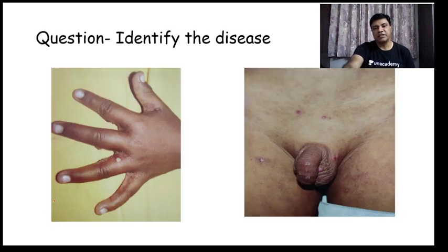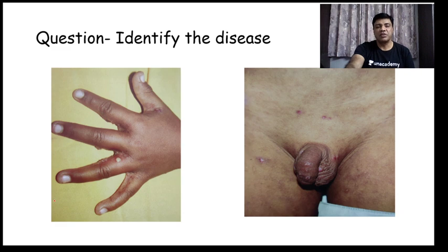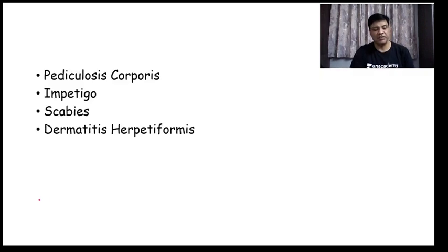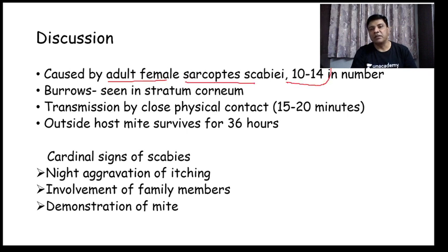Next question: identify the disease. Choices are pediculosis corporis, impetigo, scabies, and dermatitis herpetiformis. The correct answer is the patient is having scabies. Scabies is caused by adult female Sarcoptes scabiei, and in normal individuals the number of mites is only 10 to 14. The burrows it forms are seen in the stratum corneum. Transmission is by close physical contact of 15 to 20 minutes, and outside the host the mite survives only for 36 hours.